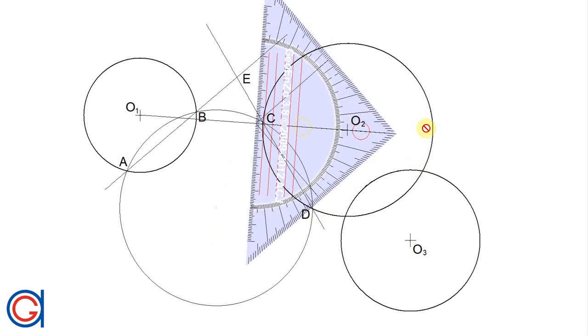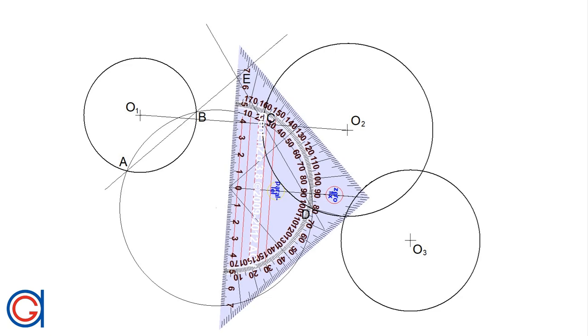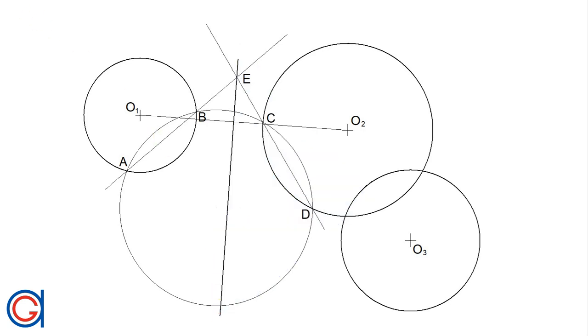And the next step is to draw a perpendicular line to this line passing through point E as shown here. And this is the first radical axis that we need in order to find the power center.